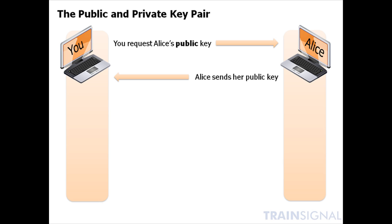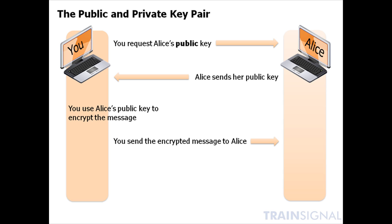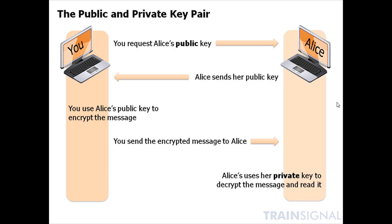Then you use that public key to encrypt the message that you want to send to Alice, and you send it back. Now, so far not so secure sounding, right? Just wait. Anything encrypted with this public key cannot be decrypted with that same key. It has to be decrypted with the pair to it — the private key — which only Alice has. She uses that private key to decrypt the message and read it.